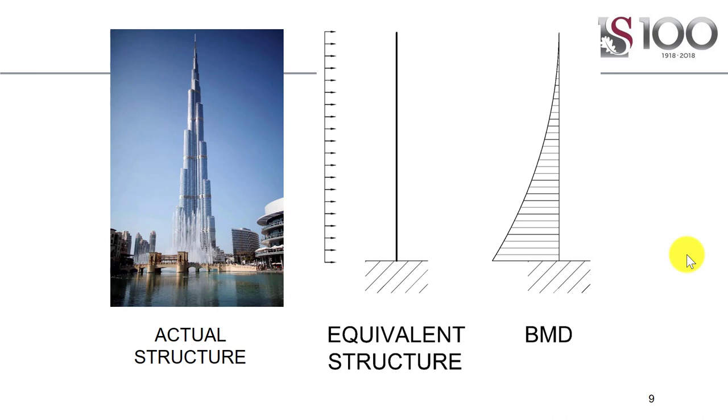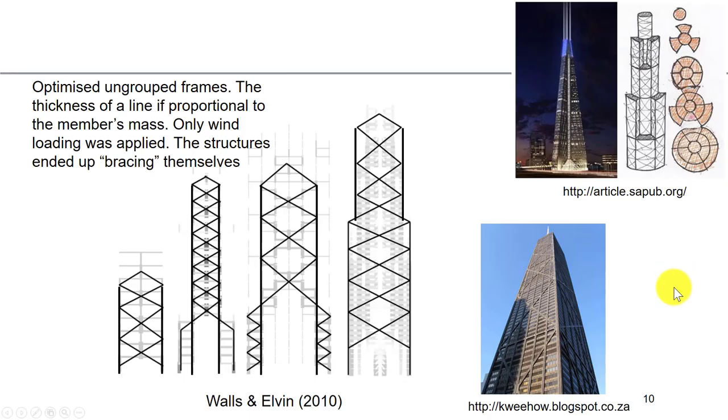Having a look at the diagrams here, these show different analyses of different multi-story buildings. This was some work I did previously. We were optimizing multi-story buildings with only lateral loads, so sideways loads applied to them. The beam and column sizes could be anything. The structures were kept symmetrical, but they could be anything. We kept optimizing and optimizing these.